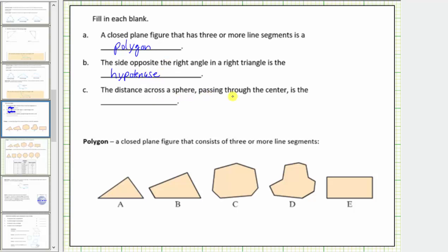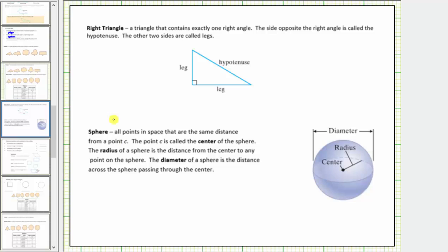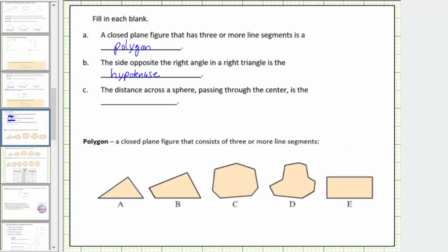For C, the distance across a sphere passing through the center is the blank. A sphere is a set of all points in space that are the same distance from a point C. A sphere is three-dimensional while polygons are two-dimensional; the point C is called the center of the sphere. The radius of a sphere is the distance from the center to any point on the sphere, and the diameter of a sphere is the distance across the sphere passing through the center. So for statement C, the distance across the sphere passing through the center is the diameter.